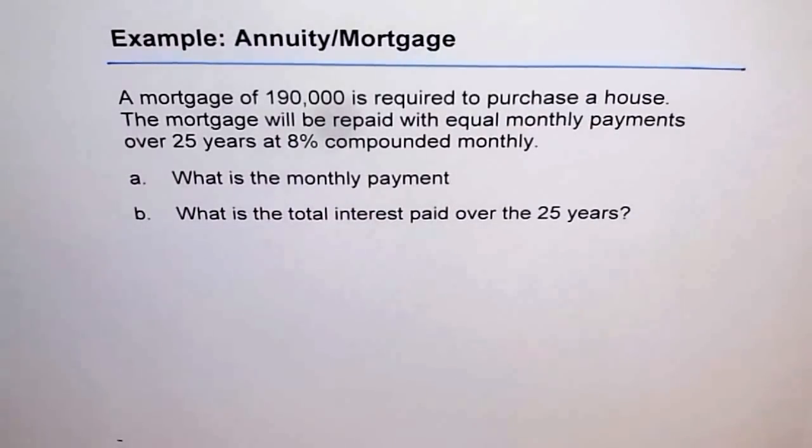Annuities and Mortgages. A mortgage of $190,000 is required to purchase a house. The mortgage will be repaid with equal monthly payments over 25 years at 8% compounded monthly.